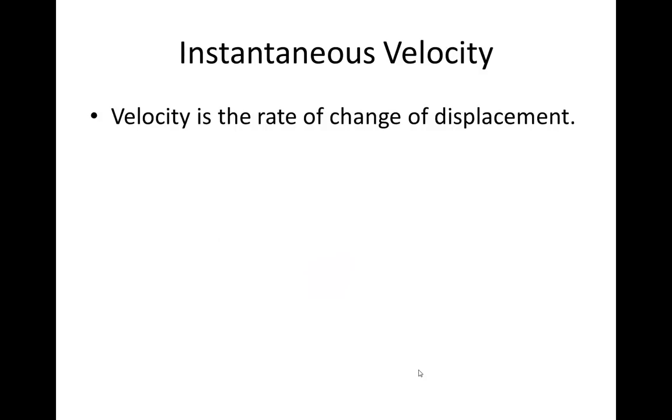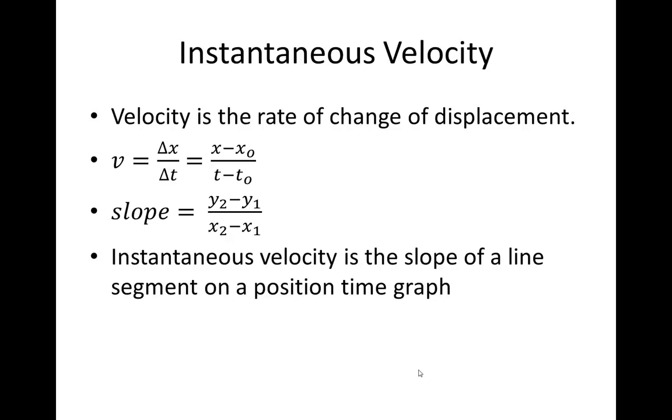Instantaneous velocity is the rate at which displacement changes. So V for velocity equals delta X divided by delta T, which is the change in X over the change in time. If you look at the equation for slope, you get Y2 minus Y1 over X2 minus X1. And those two equations are identical. This simply means that instantaneous velocity is the slope of a line segment on a position-time graph.